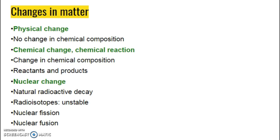Again, a review from chemistry — talking about changes in matter. A physical change is going to be where you freeze something, melt it, or evaporate it, but you're not changing the chemical structure or composition. In a chemical change, you're going to have reactants and products — what comes out is not necessarily the same as what goes in. A third type is a nuclear change. We could have radioactive decay where particles from the nucleus escape and the atom decays and breaks down slightly. Radioisotopes — you probably learned about those in Biology 1 when you talked about carbon dating.